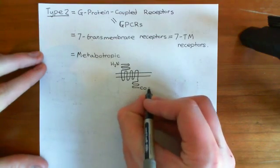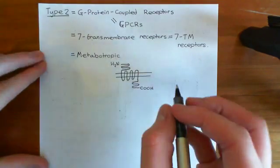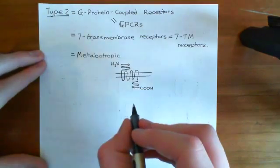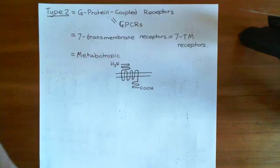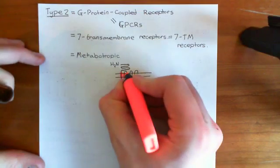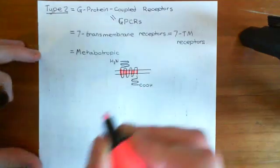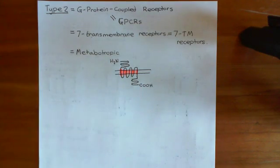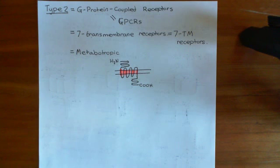And then you have the carboxylic acid terminus. So this is the basic structure of a G-protein-coupled receptor. The most important feature is that it will always, always have the seven membrane-spanning alpha helices — that is the defining characteristic of G-protein-coupled receptors.